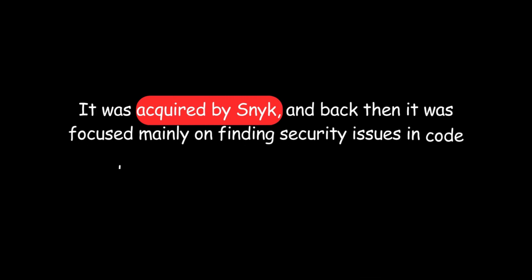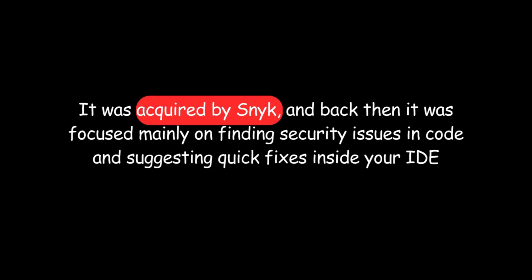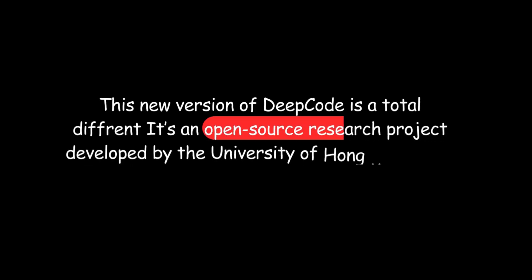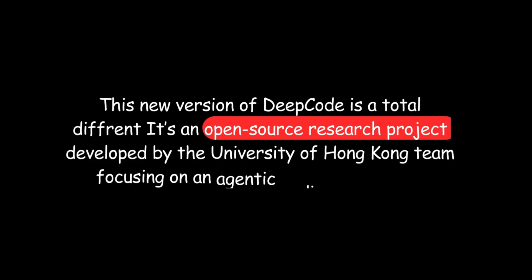Just to clear up some confusion, you might have heard of DeepCode before. Earlier, DeepCode was known for something completely different. It was acquired by Snyk and back then it was focused mainly on finding security issues in code and suggesting quick fixes inside your IDE. That was useful but it was more about improving existing code. This new version of DeepCode is totally different — it's an open source research project developed by the University of Hong Kong team, focusing on an agentic coding ecosystem.